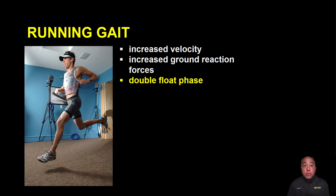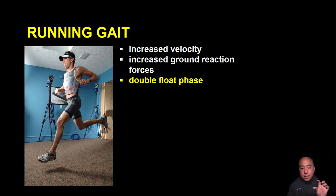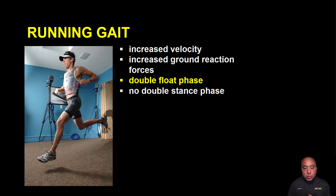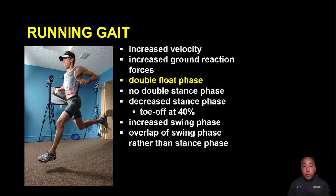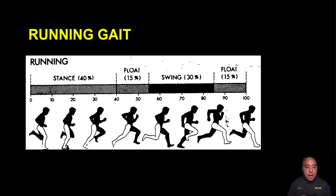The major difference between running and walking is the double float phase — the person is literally off the ground. There are two periods during the running gait cycle in which we see that double float phase, called 'double' simply because both legs are off the ground. As a result, there is no double stance phase as in walking. The stance phase is decreased to roughly 40% of the gait cycle, whereas during walking it's at 60%, and there is an increased and overlapping swing phase.